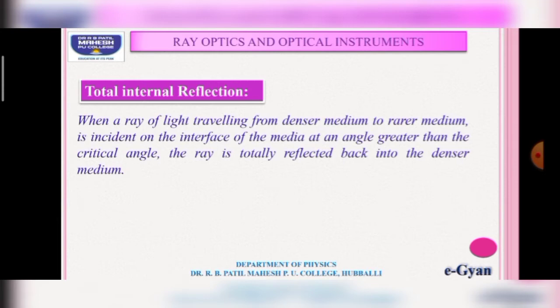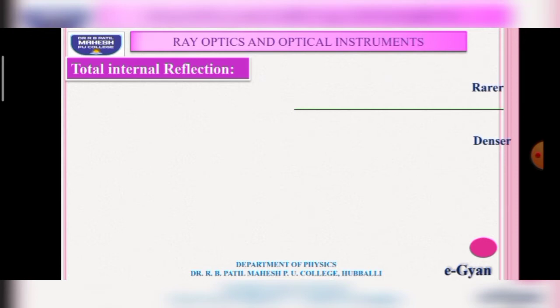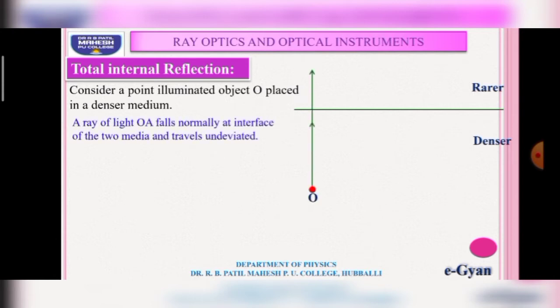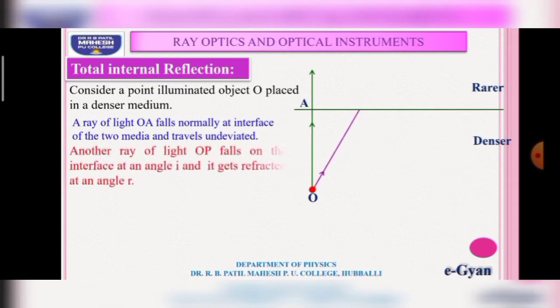This phenomenon is called total internal reflection. Let us understand it by a small demonstration. Consider two media: one is a rarer medium and the other is a denser medium, separated by an interface. Consider an illuminated object O placed in the denser medium. A ray OA falls normally at the interface and travels undeviated — it does not change its direction.